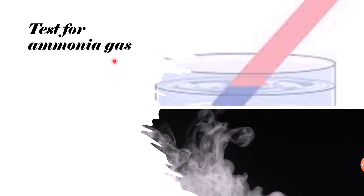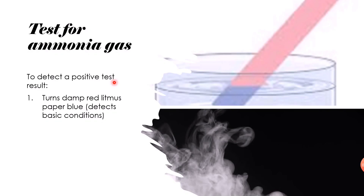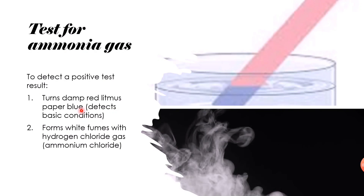Finally, to test for ammonia gas: you can detect it by holding damp red litmus paper near the gas — ammonia is basic due to the lone pair of electrons on nitrogen, so it turns the red litmus paper blue. Alternatively, ammonia gas can be detected because it forms white fumes when mixed with hydrogen chloride gas, producing ammonium chloride.